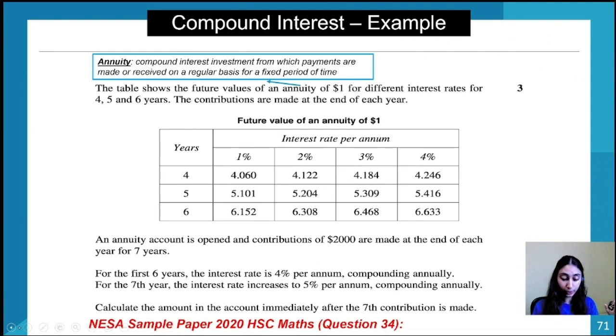So here is the question: A table shows the future value of an annuity of one dollar for different interest rates for four, five, and six years. The contributions are made at the end of each year. An annuity account is opened and contributions of two thousand dollars are made at the end of each year for seven years.